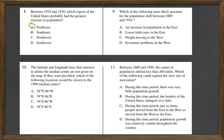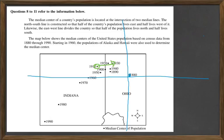Number 9. Which of the following most likely accounts for the population shift between 1880 and 1910? Again, I'm looking for a direction here. 1880 is right here. 1910 is this way. So it's heading mostly west and a little bit north.